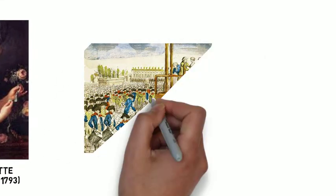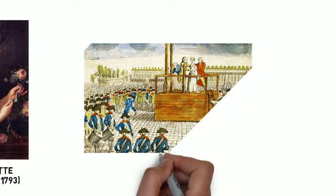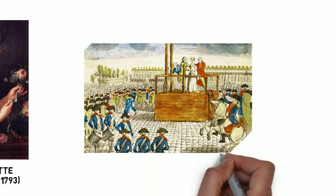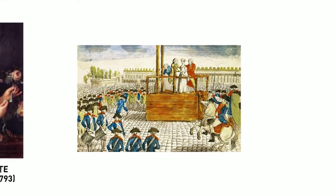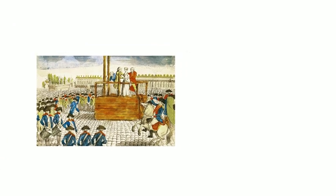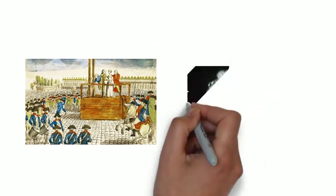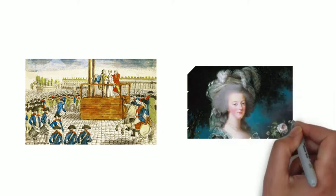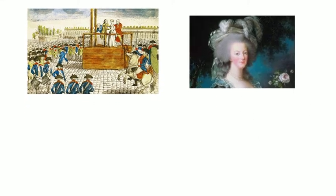After the arrest of the King and Queen in 1792, Marie Antoinette was found guilty of treason, theft and sexual abuse against her son and was executed by guillotine in 1793. One night before her execution, her hair turned white and she was 38 years old.